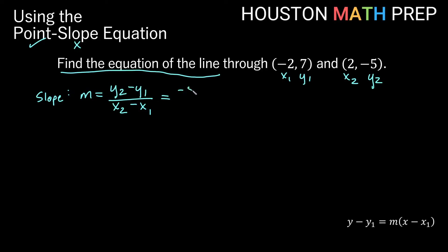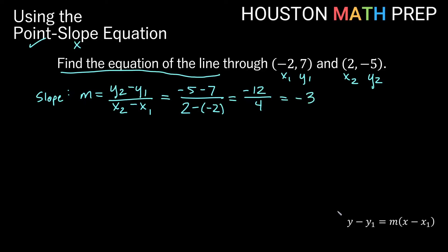So y2 minus y1 will be negative 5 minus 7, over x2 minus x1 which would be 2 minus negative 2. On top we'll get negative 12, and on the bottom 2 minus negative 2 is like 2 plus 2, so that gives us 4. Doing the divide we'll get negative 3 for our slope. So now we have a point and a slope so we can use the point-slope equation. We could actually use either point — it doesn't matter which one — as long as we use one of these points and the slope of negative 3 we would get the correct answer.